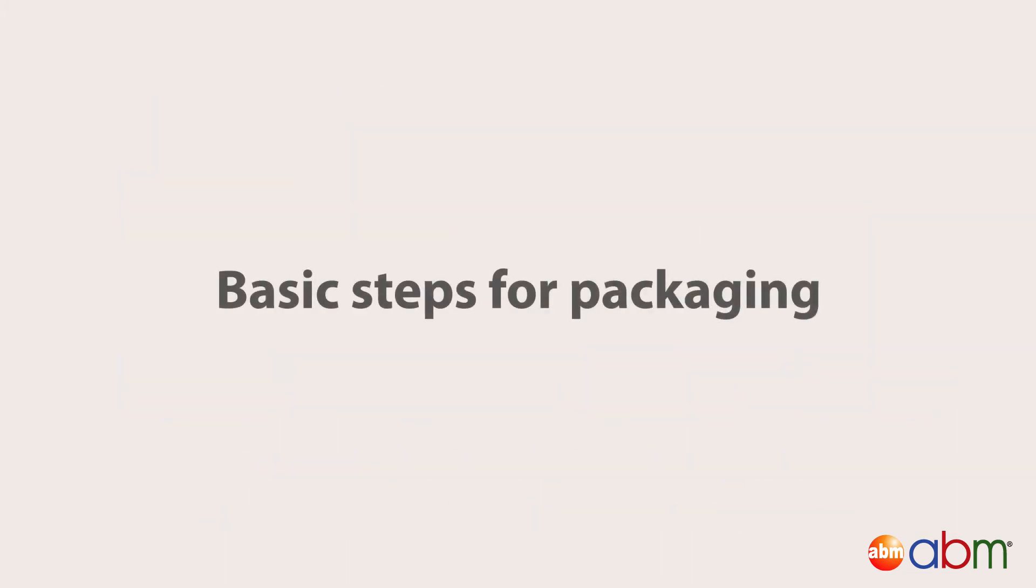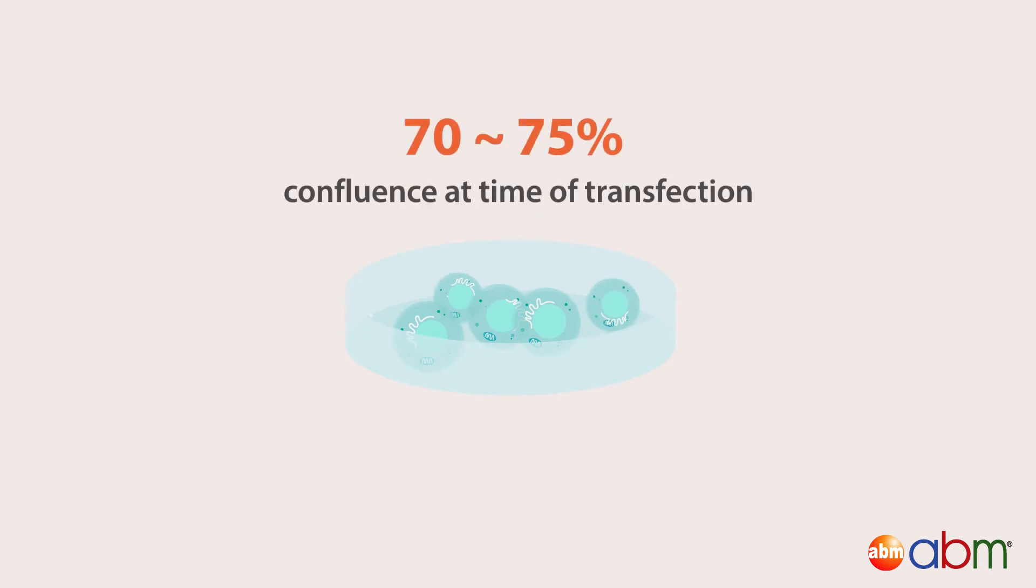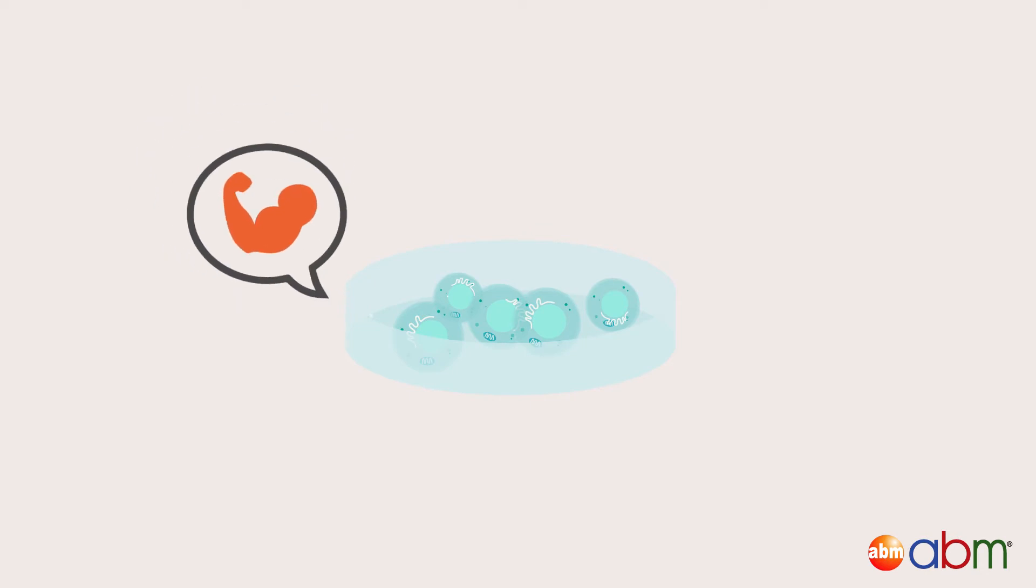Let's go through the basic steps for packaging your lentivirus. Day 1: Subculture your cell line for packaging. Subculture your cells such that they will be 70 to 75% confluence at the time of transfection. Cells must be healthy with an even distribution and no clumps.